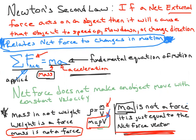Newton's first law tries to relate net forces to objects at rest or at constant velocity. Newton's second law tries to relate net forces to objects speeding up, slowing down, or changing direction. I hope you enjoyed it, and I hope to see you in the next video.